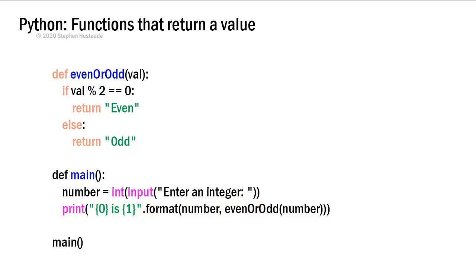And so when I call even or odd and pass it the number, number is going to go into val. And then in that function, if val modulus two is equal to zero, I'm going to return even, else I'm going to return odd. And so I wanted to show that you can call a function from within a print statement in the format, string format method.